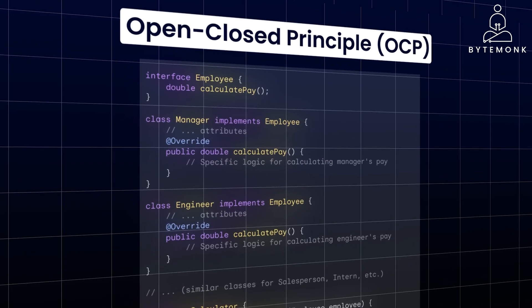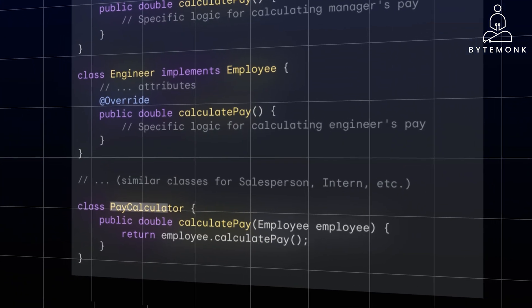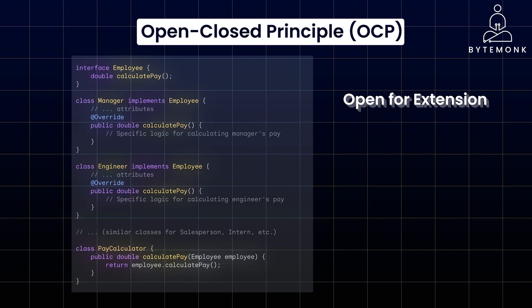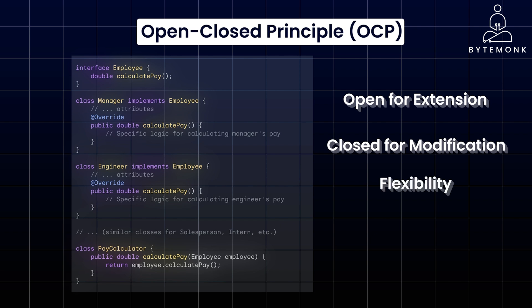In the improved design, we introduce an Employee interface that defines a CalculatePay method. Each employee type, be it manager or engineer, implements this interface and provides its own specific implementation for calculating pay. The PayCalculator class remains unchanged — it simply delegates the calculation to the employee object through the CalculatePay method. You can easily add new employee types by creating new classes that implement the Employee interface, with no need to modify the existing PayCalculator class. The design is also more flexible, as each employee type's pay calculation logic is encapsulated within its own class.